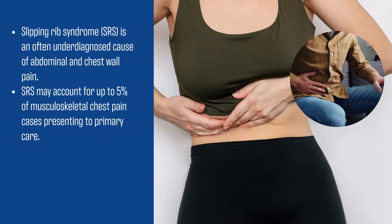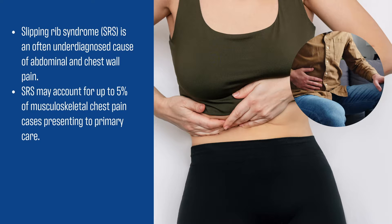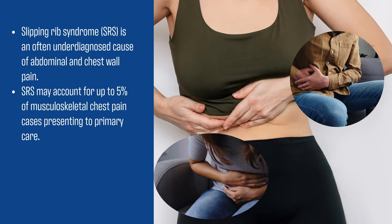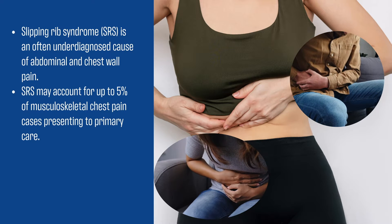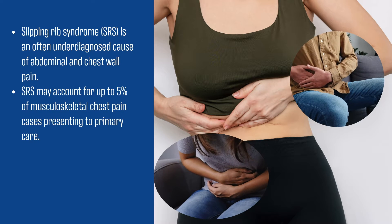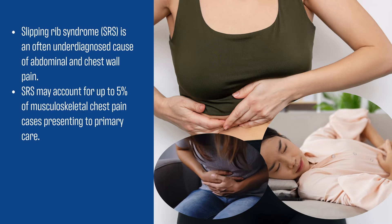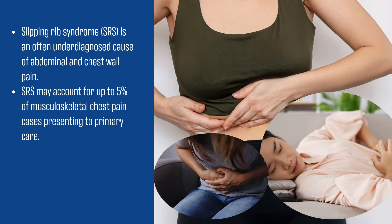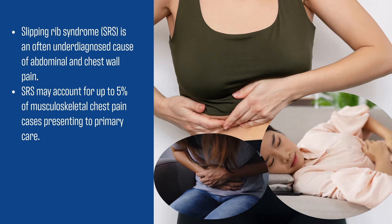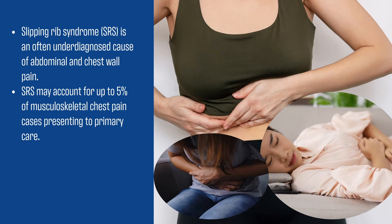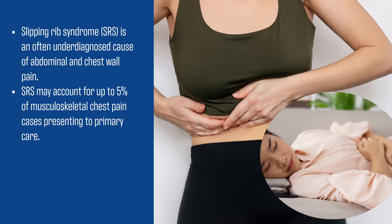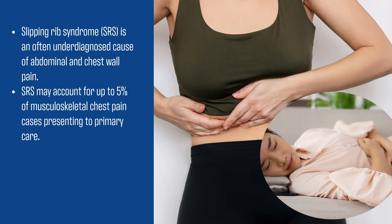Slipping rib syndrome, or SRS, is a frequently overlooked source of abdominal and chest wall discomfort in clinical practice. Studies suggest that SRS may be responsible for up to 5% of musculoskeletal chest pain cases encountered in primary care settings. This statistic underscores the importance of considering SRS in the differential diagnosis of patients presenting with such symptoms.